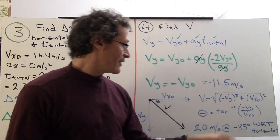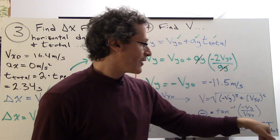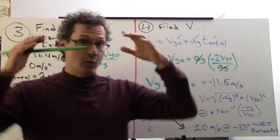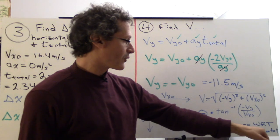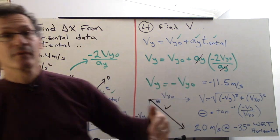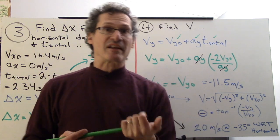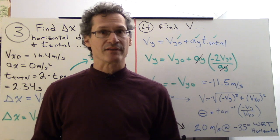WRT stands for with respect to the horizontal. So this angle here is with respect to the horizontal. And it's negative because it's below it. Symmetrical problem means that we have the same ending velocity, except with a negative angle. And that's what it is.